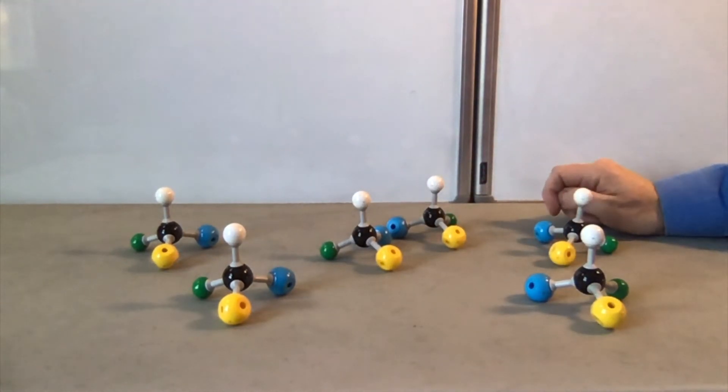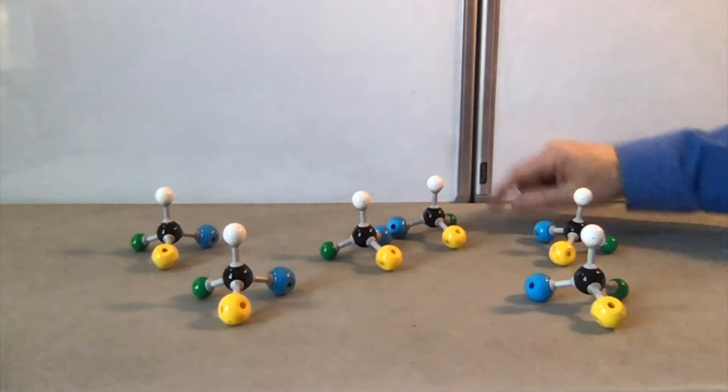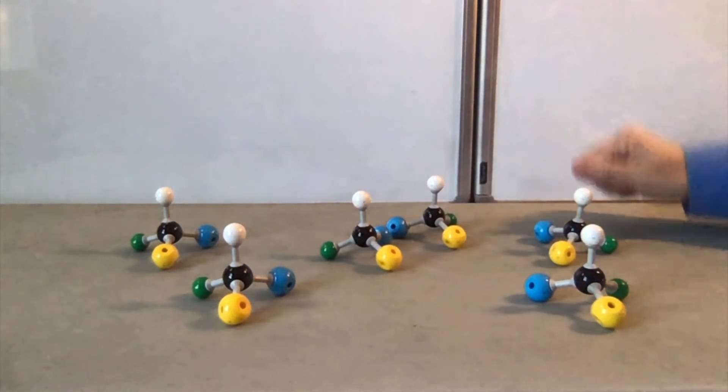That's what we call a chiral center. For example, a carbon atom with four different groups or atoms around it.